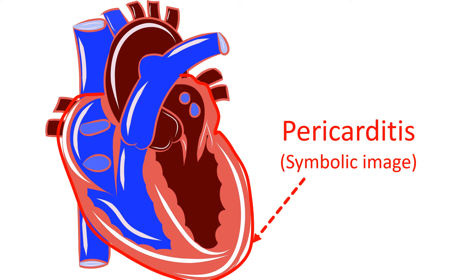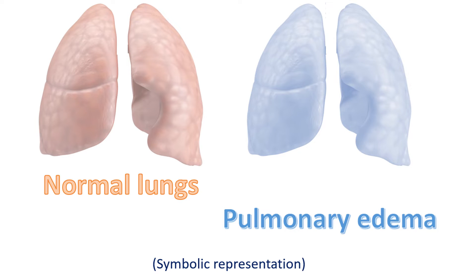Inflammation of the heart valves in rheumatic fever is known as rheumatic carditis. Occasionally, inflammation of the myocardium and pericardium can also occur in rheumatic fever, called rheumatic myocarditis and rheumatic pericarditis respectively. Pericarditis can cause chest pain in children with rheumatic fever. Myocarditis can cause heart failure, though the more likely reason for heart failure in rheumatic fever is severe valvular regurgitation. When there is severe regurgitation, some patients may develop heart failure with breathlessness, with left ventricular failure and pulmonary edema as the cause.